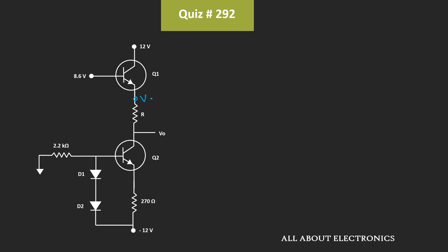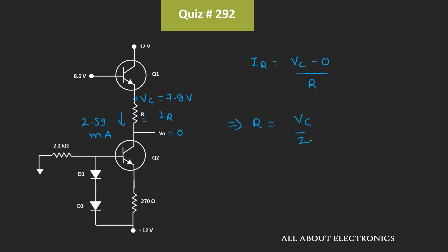We need to find the value of R such that Vout is equal to 0. We know that the current through resistor R is equal to 2.59mA. Let's call this current IR. We can say that IR is equal to voltage Vc minus 0, divided by R. That means R is equal to Vc divided by IR, which is equal to 7.9V divided by 2.59mA, that is equal to 3.047kΩ. Whenever the value of R is equal to 3.047kΩ, Vout is equal to 0V.